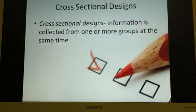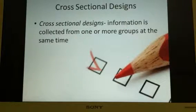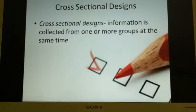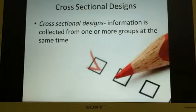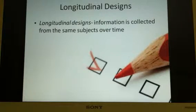First, we need to look at the two types of designs for which we can be testing. Cross-sectional designs are when information is collected from one or more groups at the same time. This would be taking a look at students', teachers', administrators', or parents' perspectives over the course of one year. You are looking at the attitudes and decisions of different groups of people in different cohorts about the same issue.